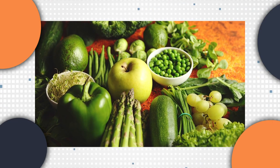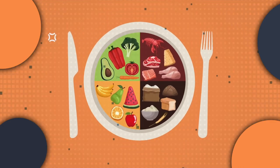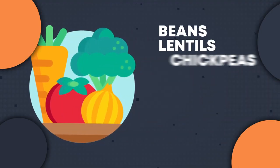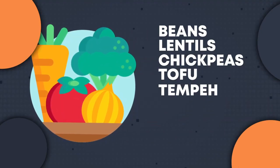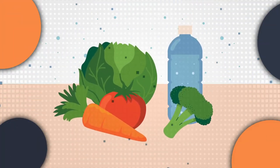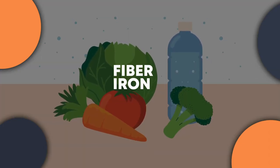But wait, what if you're a plant-based enthusiast? Fortunately, vegetarians and vegans have a wealth of high-protein options available to them such as beans, lentils, chickpeas, tofu, tempeh, seitan, quinoa, nuts, and seeds which are not only rich in protein but also packed with a variety of other essential nutrients including fiber, iron, and zinc.